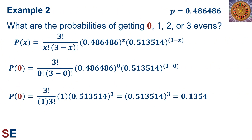So what is our probability of getting 0, 1, 2, or 3 evens? Let's do 0 first. The probability of seeing 0 evens is 3 factorial divided by 0 factorial times 3 minus 0 factorial, times 0.486486 to the 0 power, times 0.513514 to the 3 minus 0 power. The 3 factorials cancel and the fraction equals 1. The 0.486486 to the 0 power becomes 1. The 0.513514 to the 3rd power is all that's left, and that equals 0.1354.